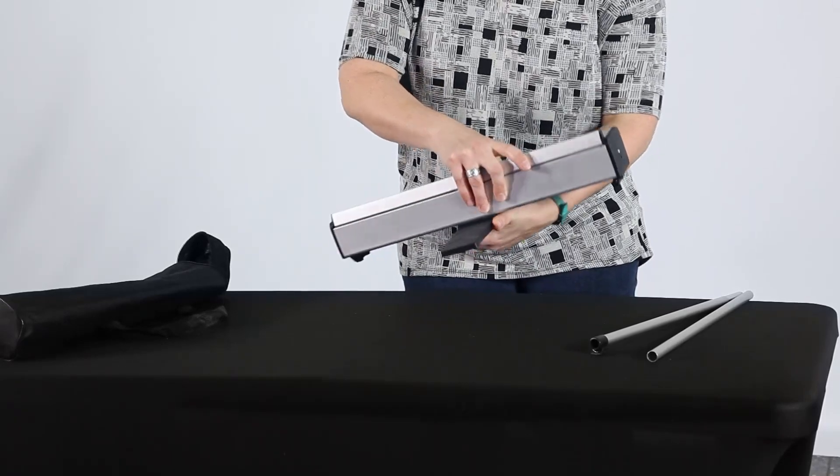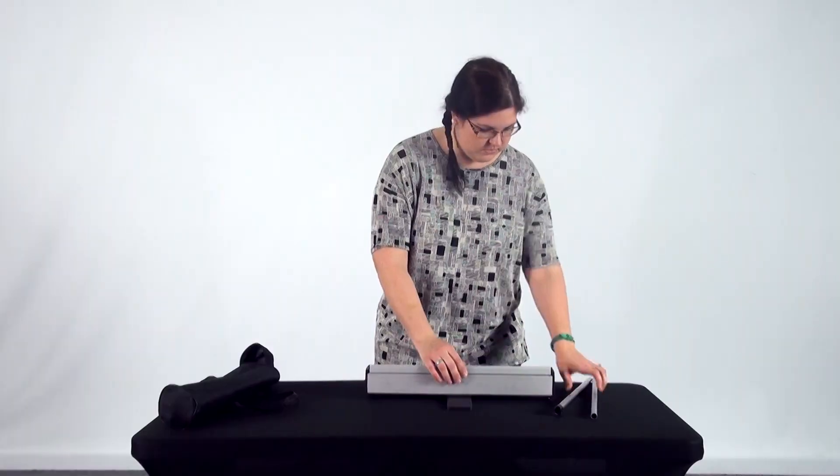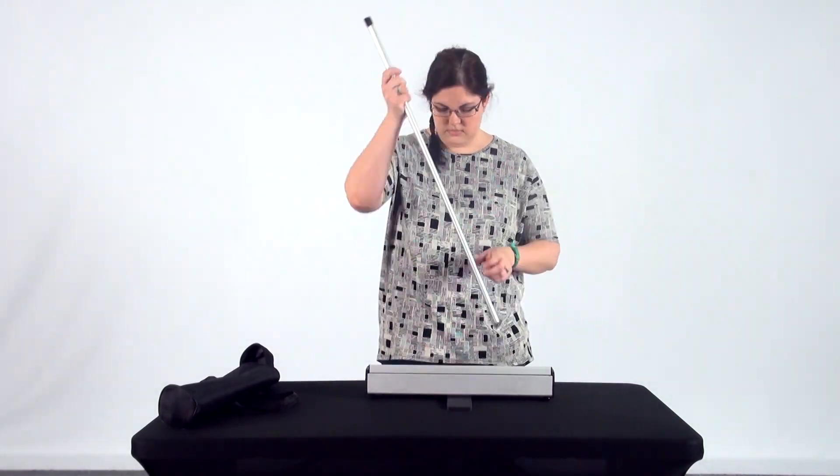Rotate the base 90 degrees and set on the table. Now take your support bars and connect them together to form the support pole.